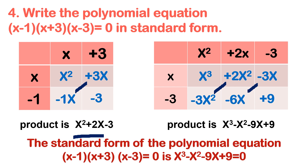So the standard form of the polynomial equation (x-1)(x+3)(x-3) = 0 is x cubed minus x squared minus 9x plus 9 equals 0.